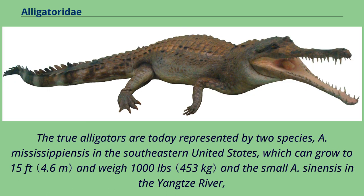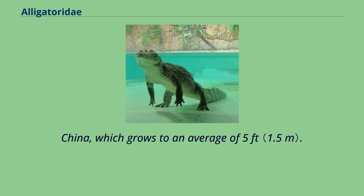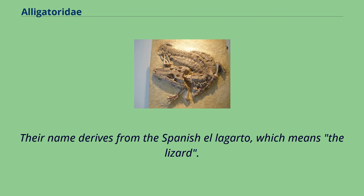The true alligators are today represented by two species: A. mississippiensis in the southeastern United States, which can grow to 15 feet and weigh 1,000 pounds, and the smaller A. sinensis in the Yangtze River, China, which grows to an average of 5 feet. Their name derives from the Spanish 'el lagarto,' which means 'the lizard.'